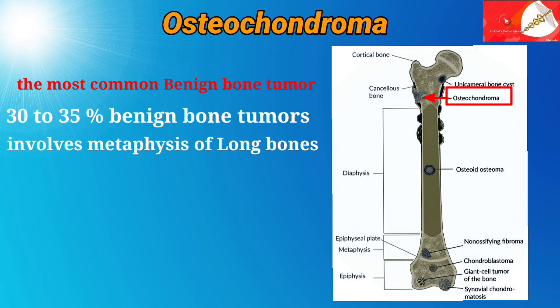Osteochondroma usually involves the metaphysis of long bones, particularly around the knee and the proximal end of the humerus, and may involve flat bones as well, such as the pelvis and scapula.